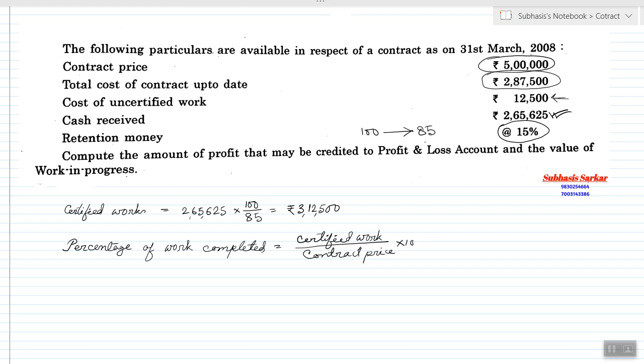Into 100. That is 3,12,500 by Contract Price 5,00,000 into 100, equals 62.5%.